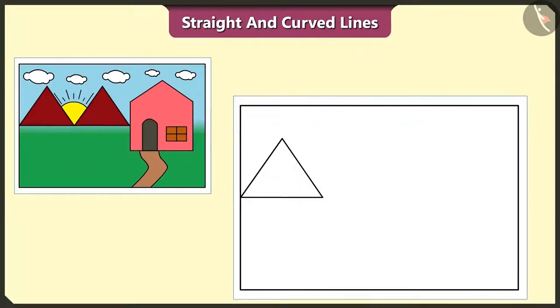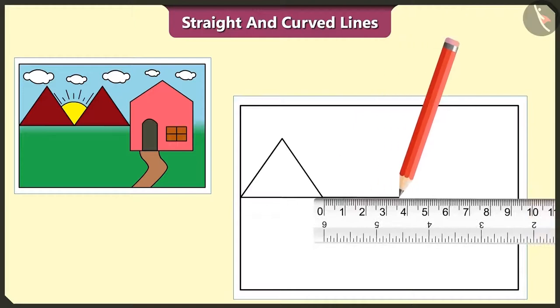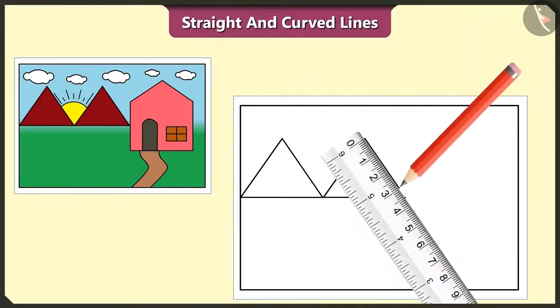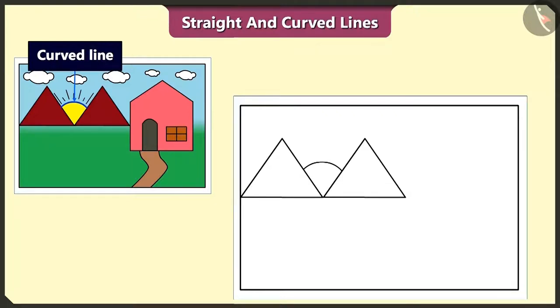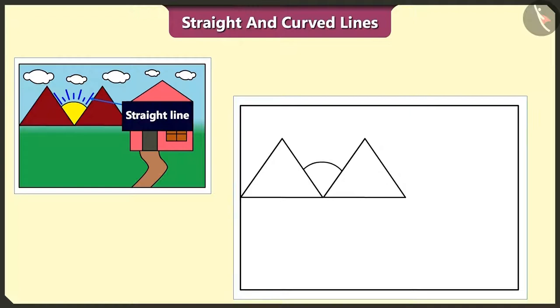And I made a similar hill beside it like this. Oh wow, let's draw one sun like this with the curved lines between these two hills made up of straight lines. And draw sun rays using straight lines like this.